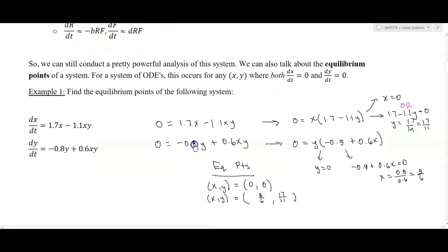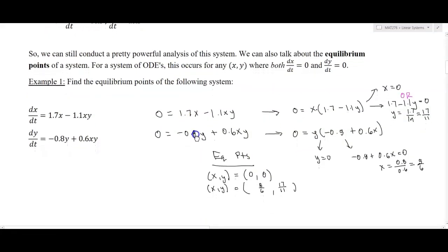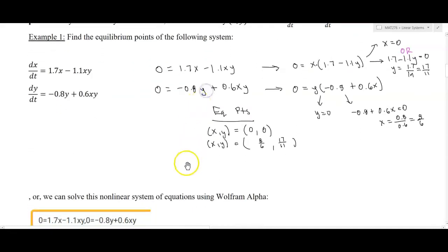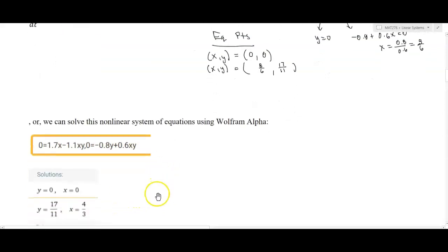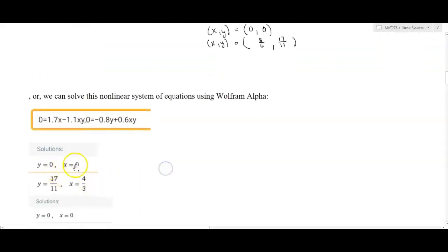This can become tedious solving these. I thought it would be valuable to see how one would compute these algebraically. But we can also solve a system like this with Wolfram Alpha, which can do that heavy lifting for us. All I've input into Wolfram is zero equals 1.7x minus 1.1xy comma zero equals negative 0.8y plus 0.6xy.